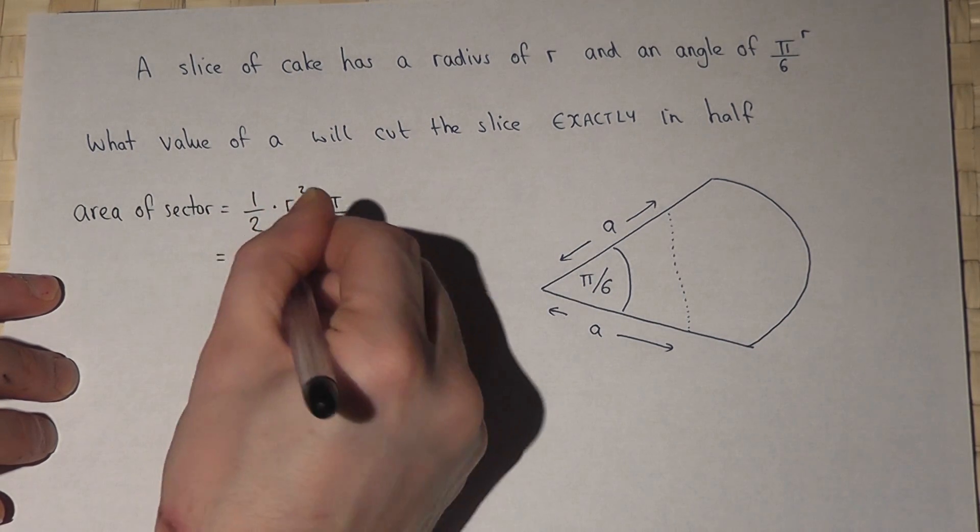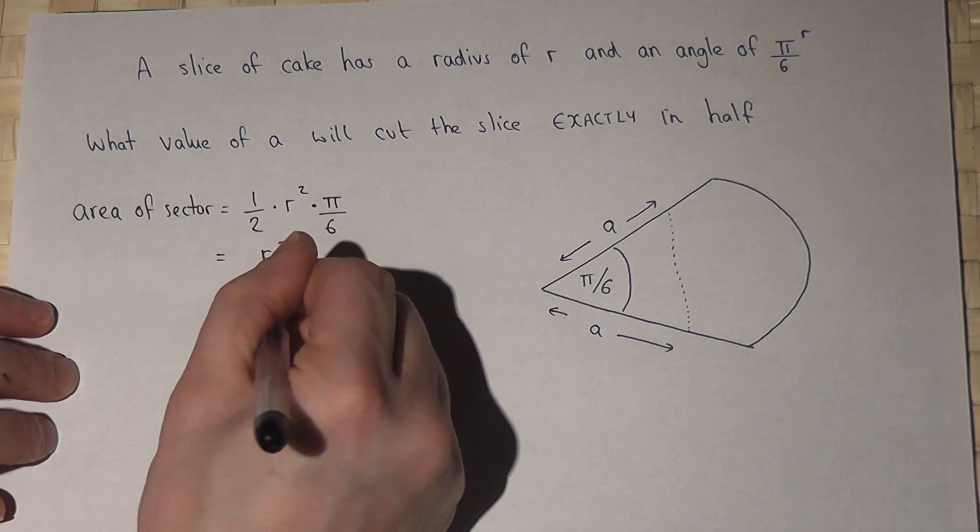So this is R squared times pi all over 12.